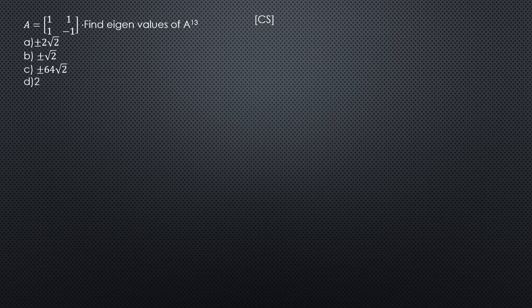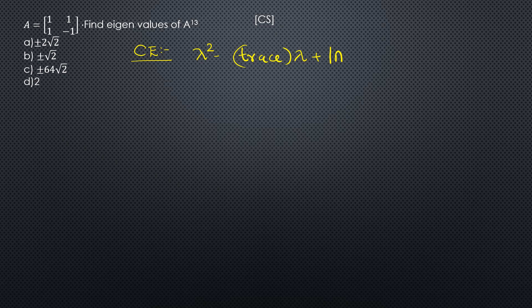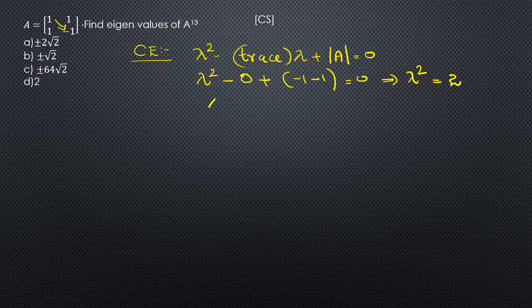For matrix A equal to [[1,1],[1,-1]], find the eigenvalues of A raised to 13. Writing the characteristic equation: lambda squared minus trace times lambda plus determinant of A equals 0. The trace is 1 minus 1 equals 0, and the determinant is minus 1 minus 1 equals minus 2. So lambda squared equals 2, meaning lambda equals plus or minus root 2.